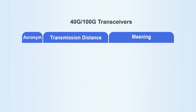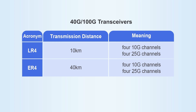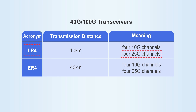For 40G and 100G optical modules, LR4 refers to a transmission distance of 10 km, and ER4 refers to a transmission distance of 40 km. Why do they add a 4 at the end? Because it is 4 channels — 40G can be divided into 4 x 10G channels, and 100G can be divided into 4 x 25G channels.